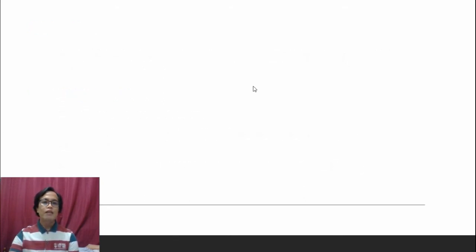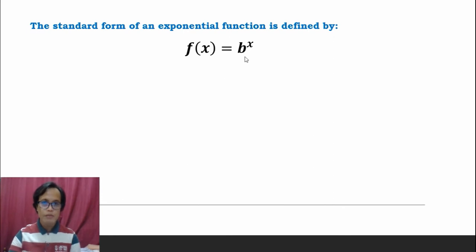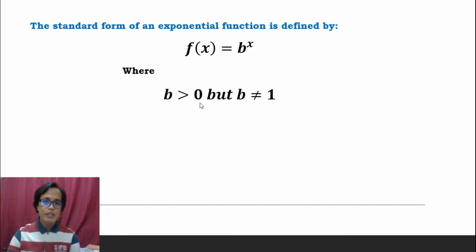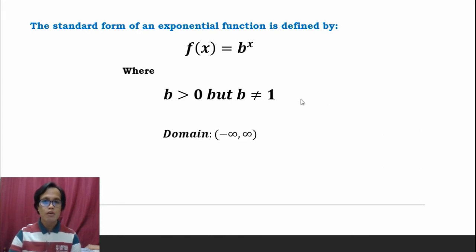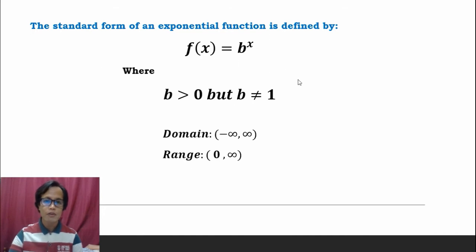Let us review first the standard form of an exponential function, which is defined by f(x) = b raised to x. The standard form of an exponential function requires b to be greater than zero but not equal to one. The domain for this function is all real numbers — from negative infinity to positive infinity — and the range is from zero up to positive infinity.